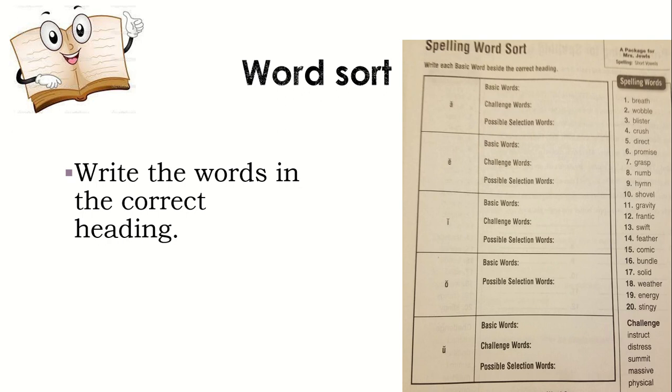A word with A sound. From the list, it could be grasp, frantic. A word with A sound: breath, feather. Words with E sound: blister, physical, distress, instruct. Words with O sound: shovel, comic, solid. Word with U sound: submit, crush, bundle.